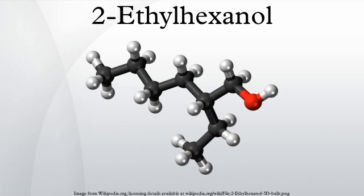The n-butyraldehyde is made by hydroformylation of propylene, either in a self-contained plant or as the first step in a fully integrated facility. Most facilities make n-butanol and isobutanol in addition to 2-ethylhexanol.